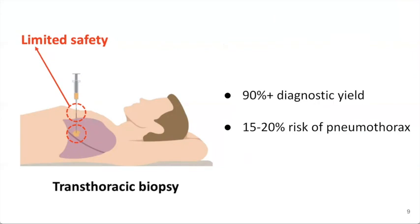The first is trans-thoracic biopsy, where a physician inserts a biopsy needle through the chest wall into the lungs, generally under image guidance. This technique has a very high diagnostic yield and is able to reach nearly all regions in the lung, but has a relatively high risk for pneumothorax, which is a medical complication where air enters the space between the chest wall and the lungs.